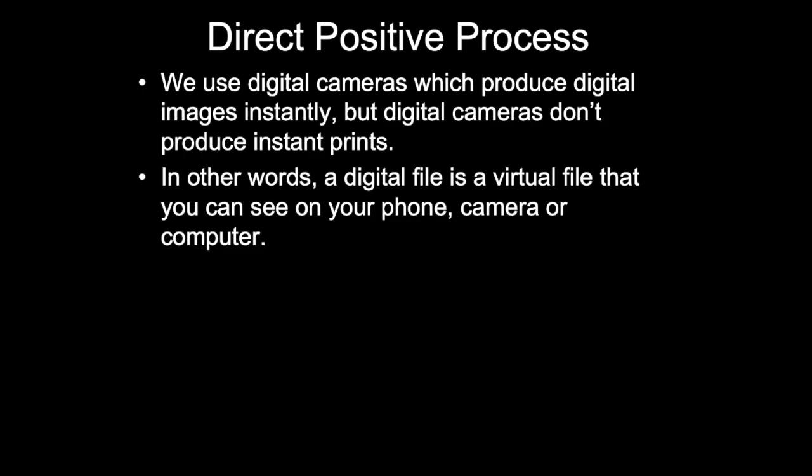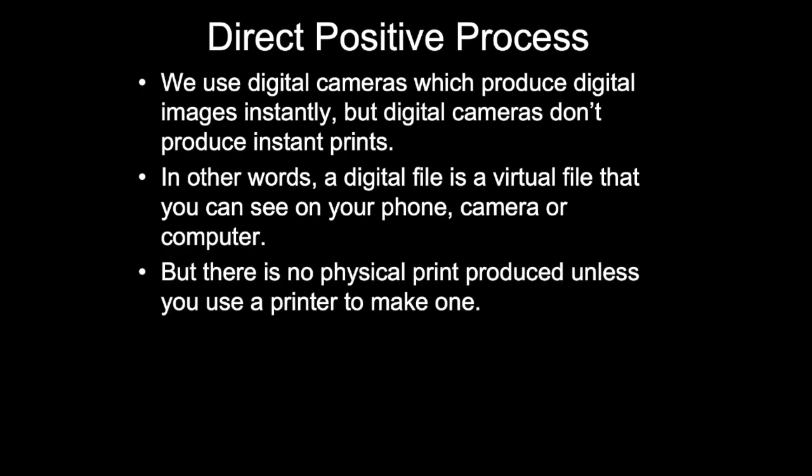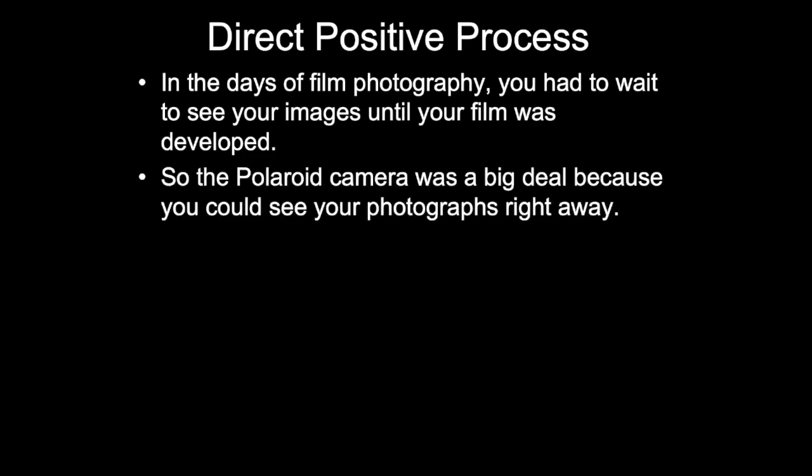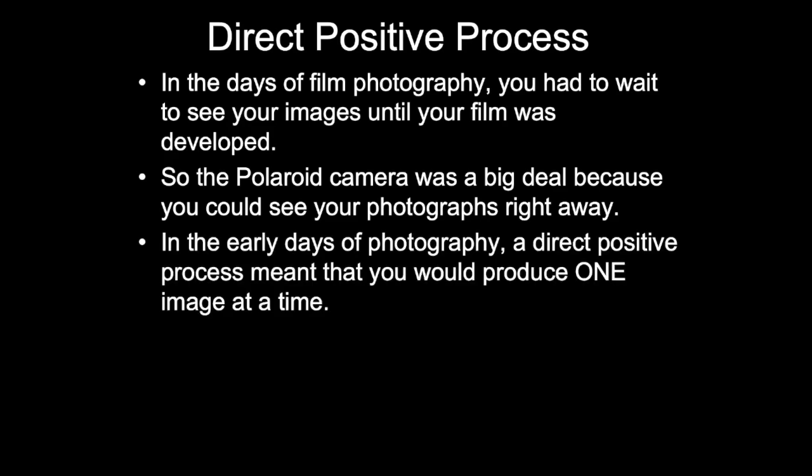A digital file is a virtual file that you can see on your phone, camera, or computer, but there is no physical print produced unless you use a printer to make one. In the days of film photography, you had to wait to see your images until your film was developed. So the Polaroid camera was a big deal because you could see your photographs right away.